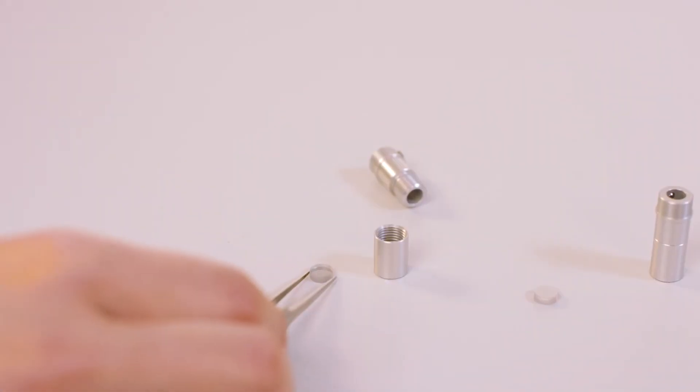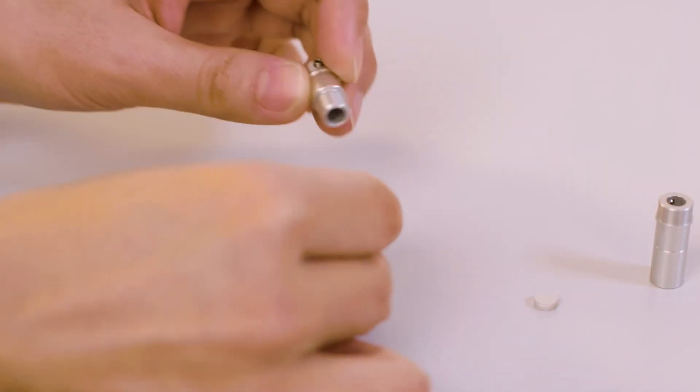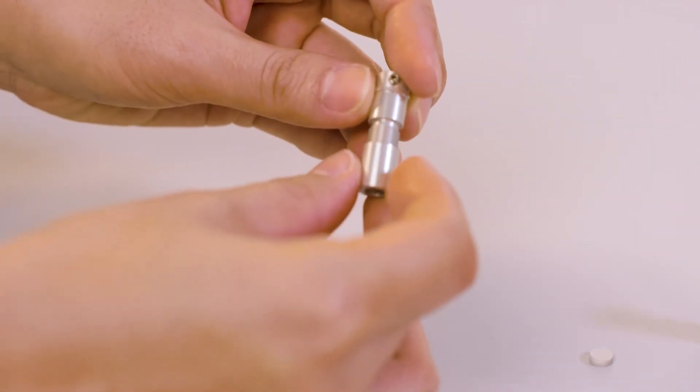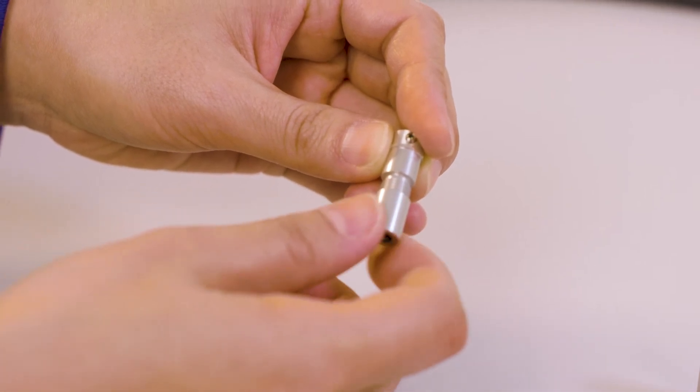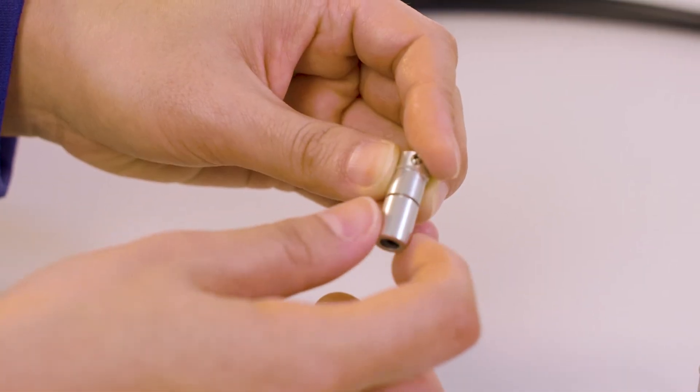Insert any desired filters by unscrewing the holder end cap. Make sure that the filters slide flat in the holder before screwing the cap back on. The filter holders must be in place even if no filters are required.